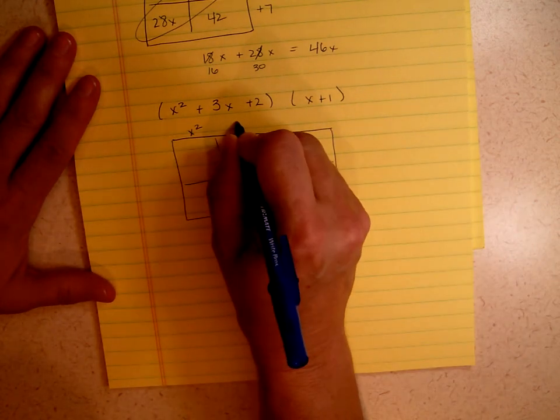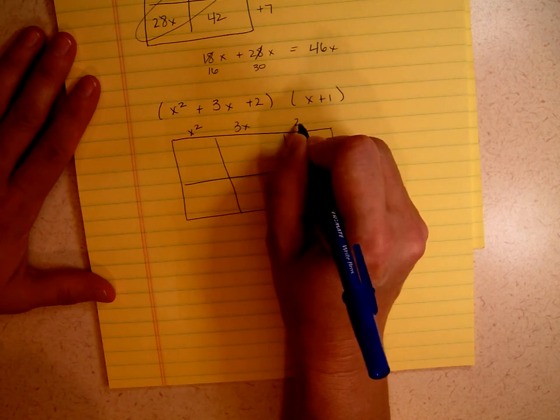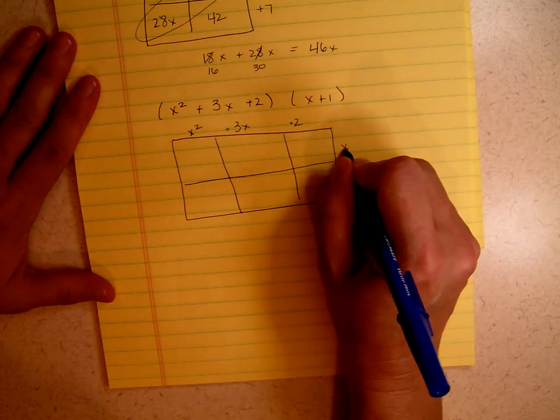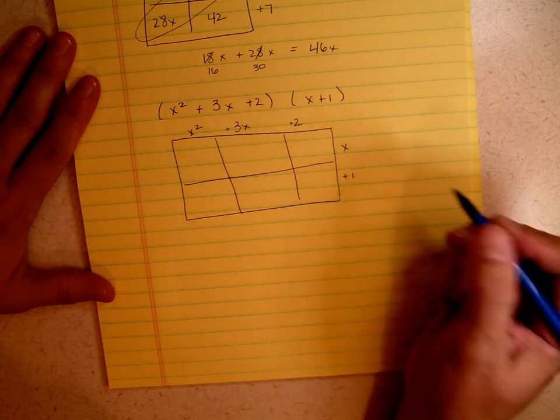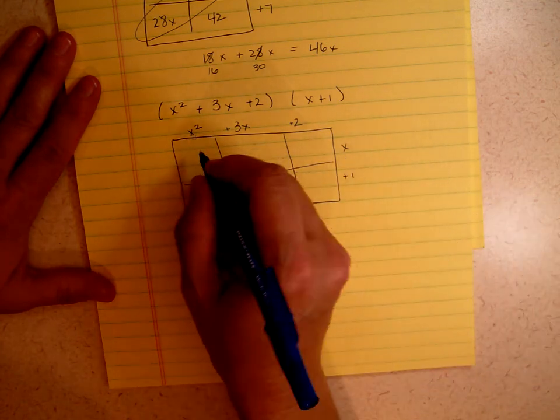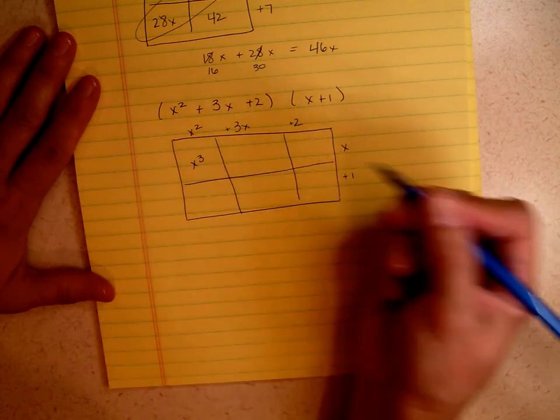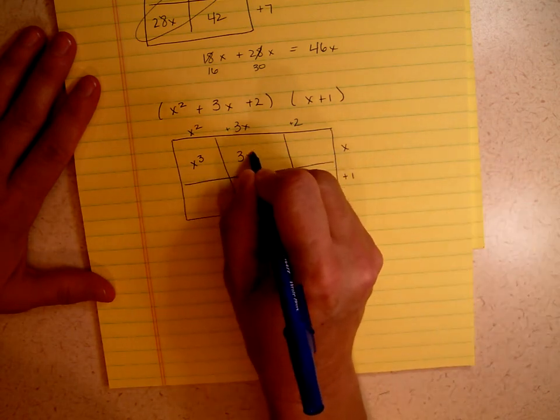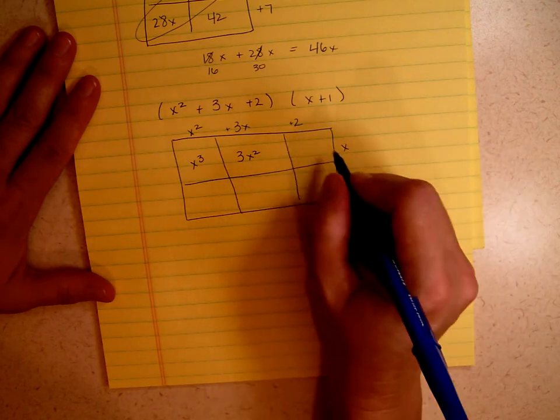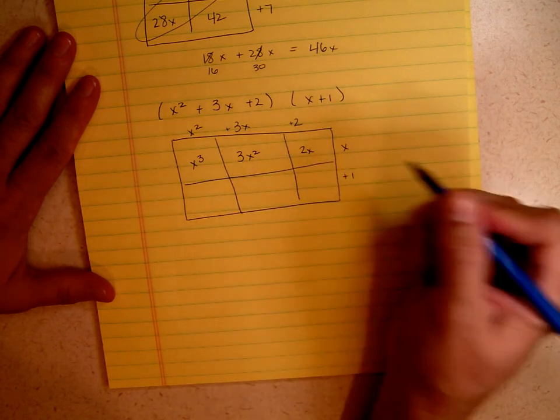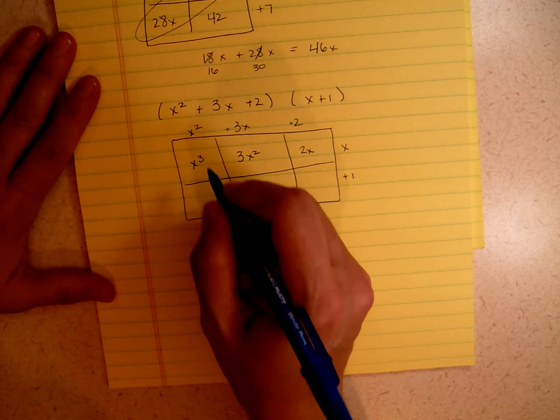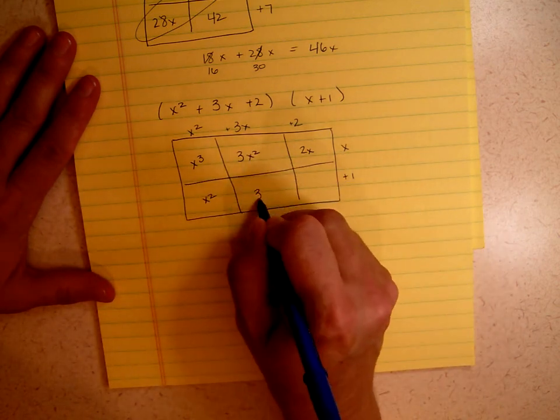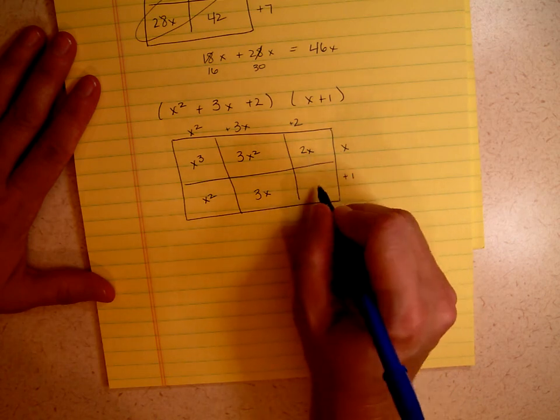x squared, 3x, 2. Let's go ahead and keep our plus signs to keep this so that we don't get confused. x and plus 1. x times x squared gives us x cubed. x times 3x gives us 3x squared. x times 2 gives us 2x. 1 times x squared is x squared. 1 times 3x is 3x. And 1 times 2 is 2.